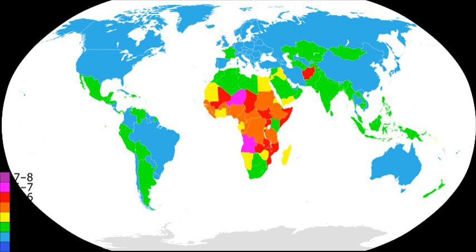Singapore has undergone two major phases in its population planning: first to slow and reverse the baby boom in the post-World War II era, then from the 1980s onwards to encourage couples to have more children as the birth rate had fallen below the replacement level fertility. In addition, during the interim period, eugenics policies were adopted.